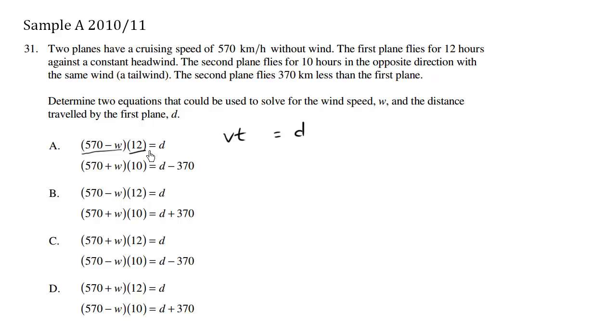So the distance equals velocity times time. The velocity being 570 minus w, because we're against a headwind which slows our velocity down. So 570 minus w, where w is the speed of the headwind. This makes sense.